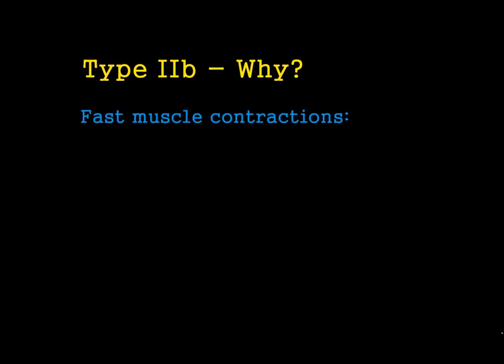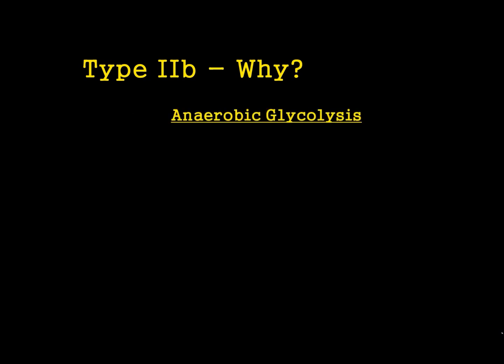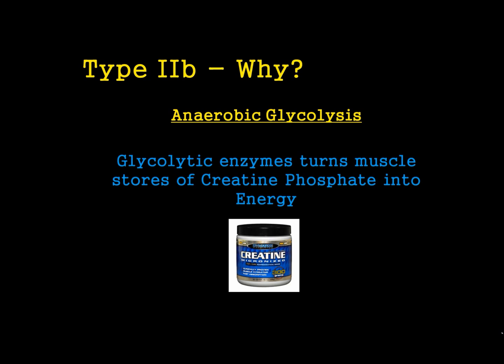The reason they're so fast at contracting is down to how they get their energy. Energy is produced without oxygen — known as anaerobic. There's a chemical reaction that takes place called anaerobic glycolysis, which is essentially how we produce energy without using oxygen. This chemical reaction is really quick, and that's why Type 2 muscle fibres can work so quickly. We have glycolytic enzymes — chemicals within the body that turn our muscle stores of creatine phosphate into energy. Creatine phosphate is the fuel source, and by using our glycolytic enzymes we're able to produce muscle force very quickly.